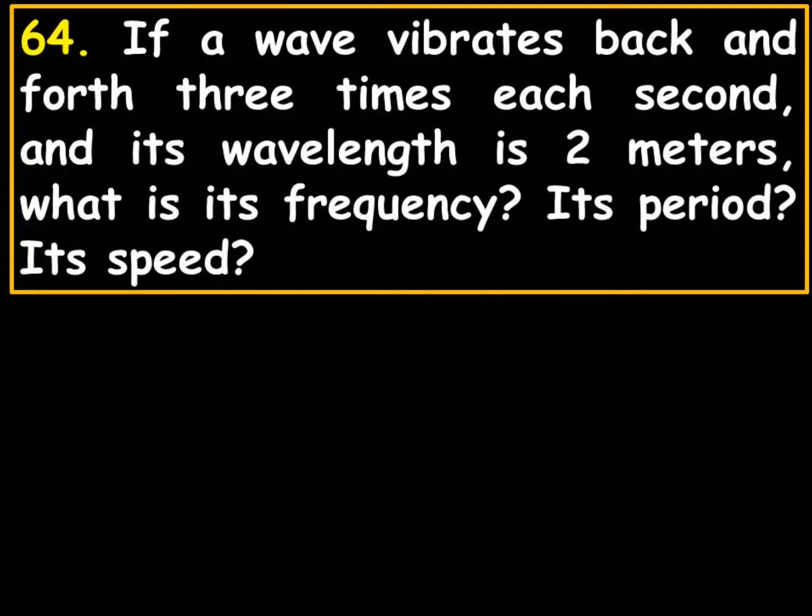If a wave vibrates back and forth three times each second - back and forth, that's one cycle - so three times each second, and its wavelength is two meters, what is its frequency, its period, its speed?